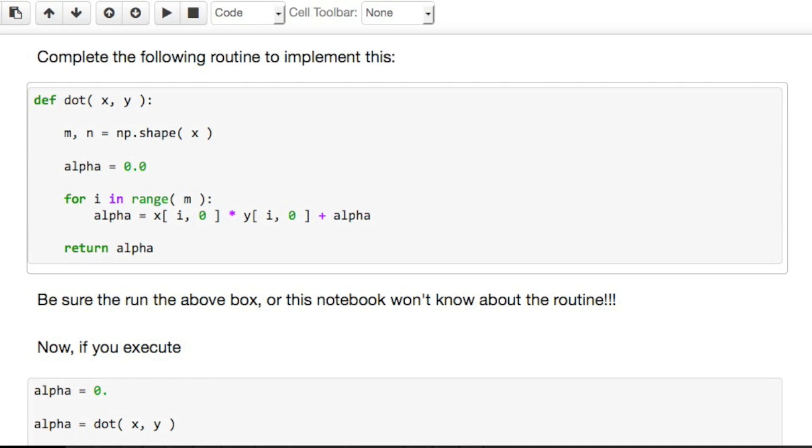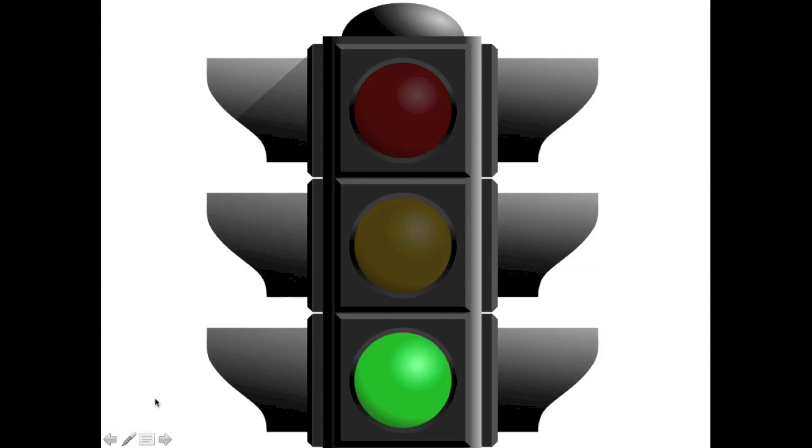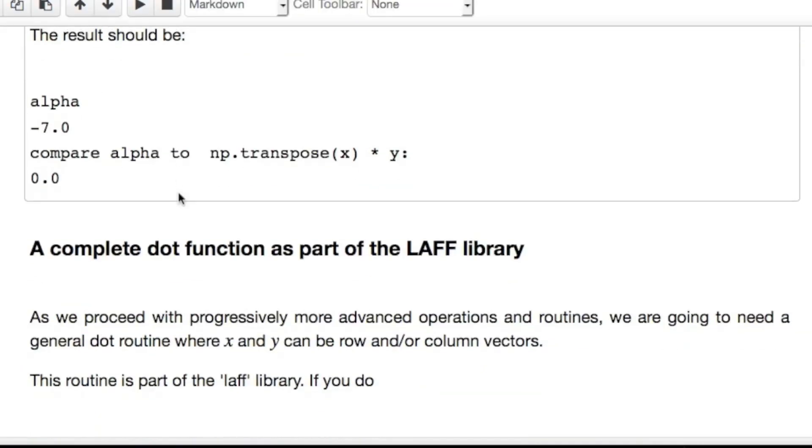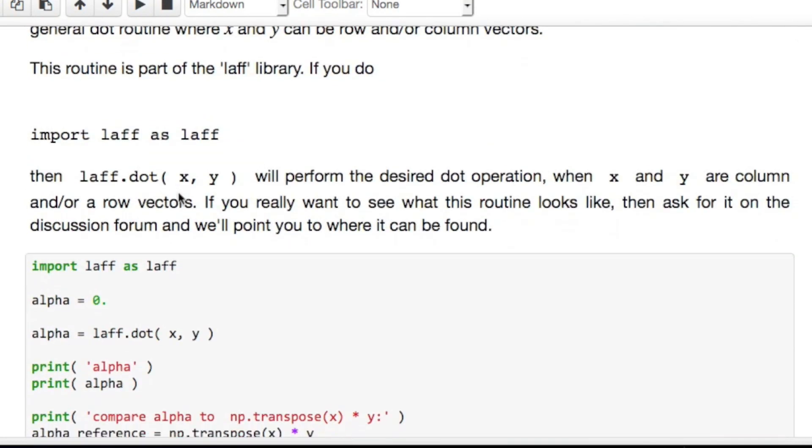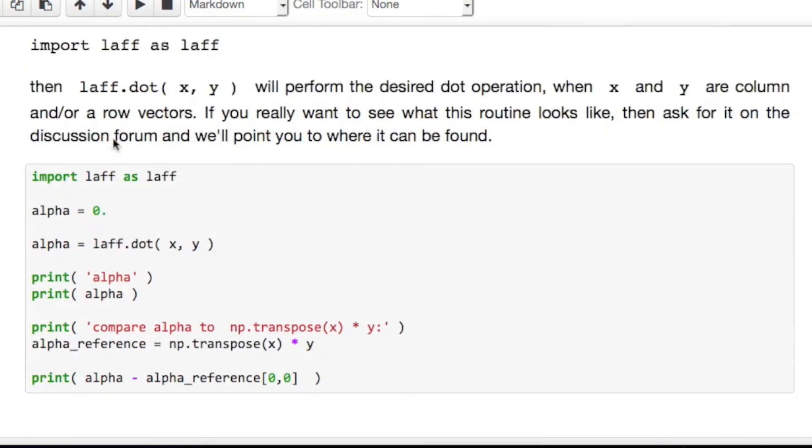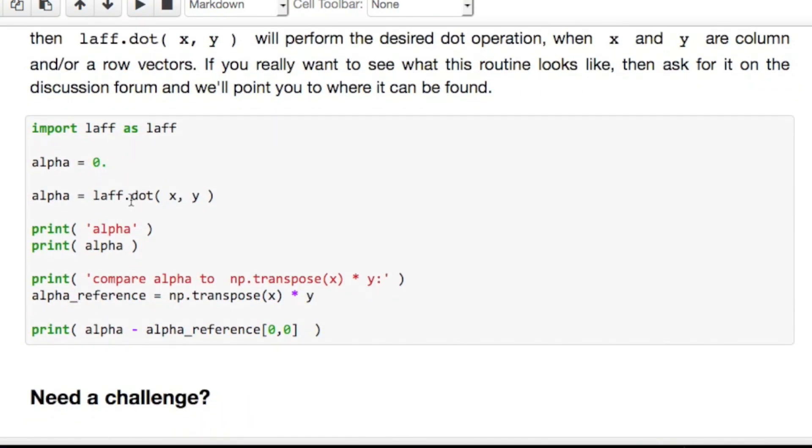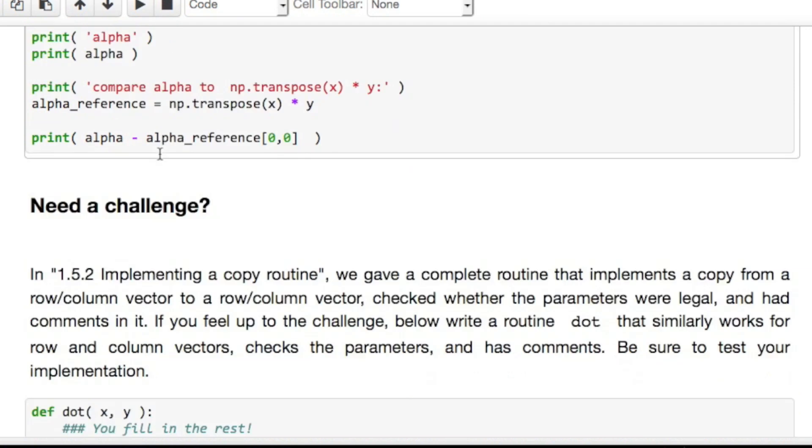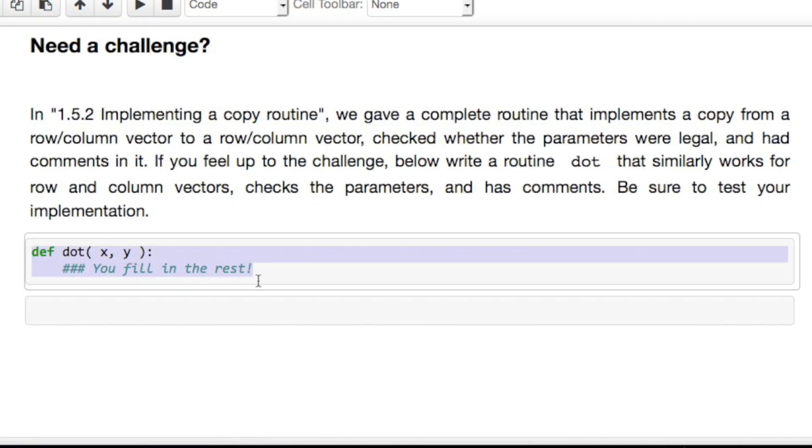So, some lessons to be learned here, and hopefully you learned them. As always, the laff library also has a dot product routine. That particular dot product routine can take dot products whether x and or y are rows or columns. We'll see why that's important later on. And if you feel up to it, then you can go and implement a complete routine that works whether x and or y are row and or column vectors.